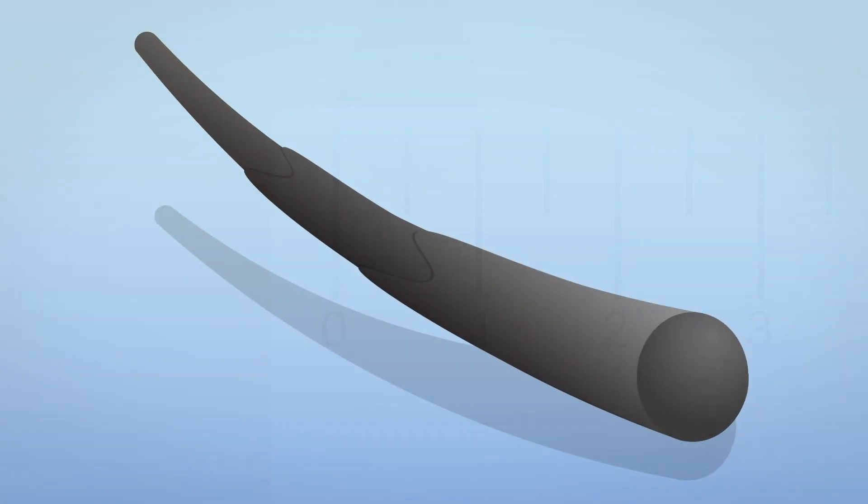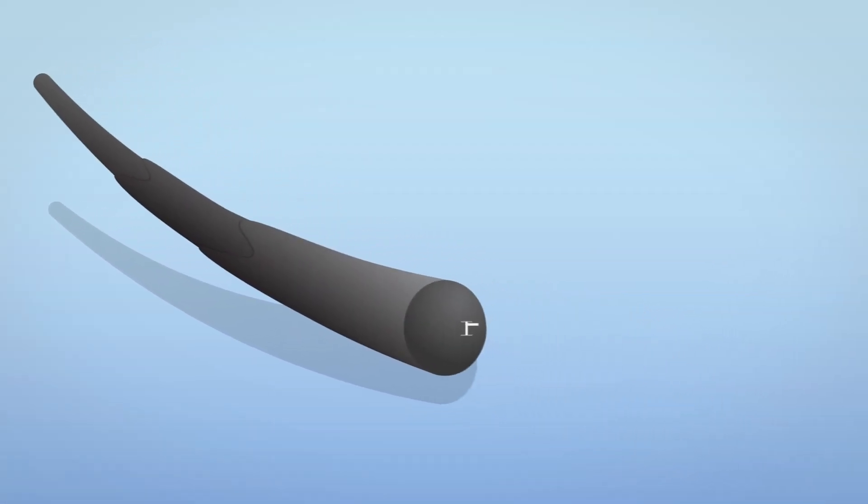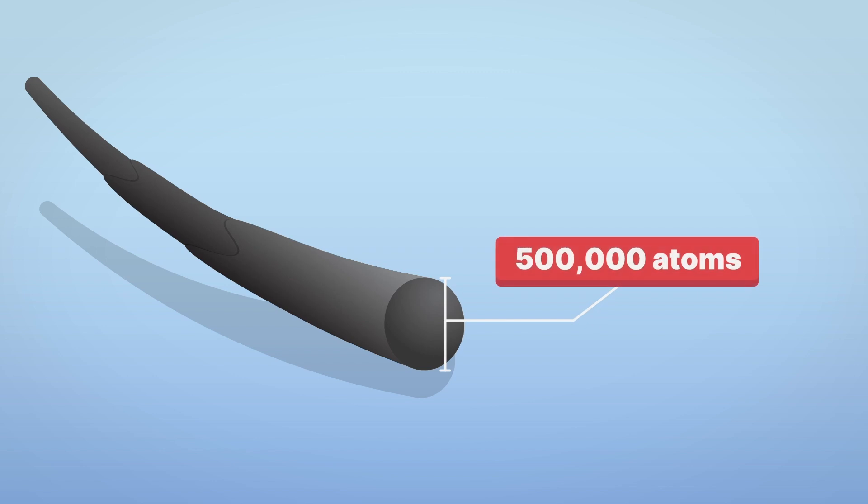And even though hair is super thin, it's nothing compared to how small atoms are. You'd need 500,000 atoms lined up to match the thickness of one single hair.